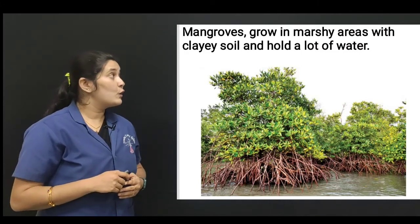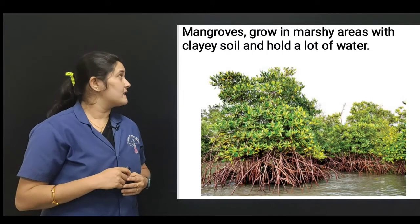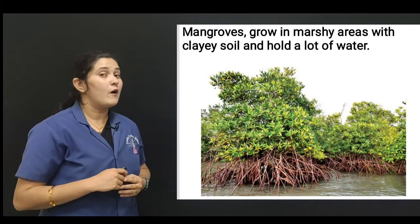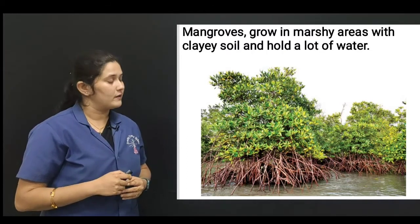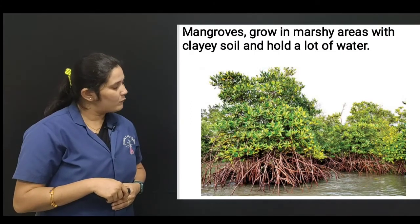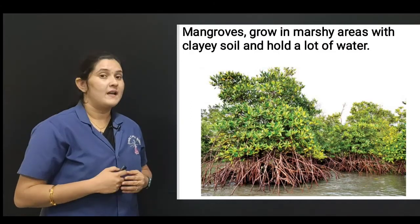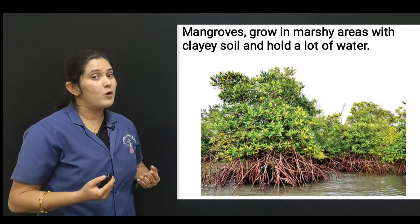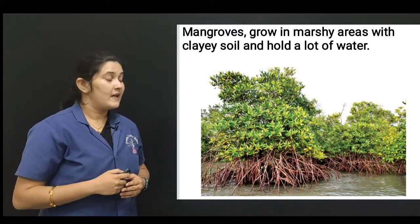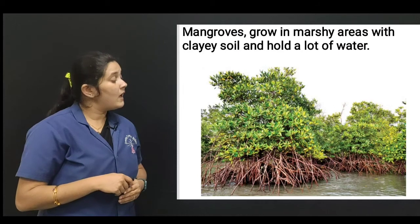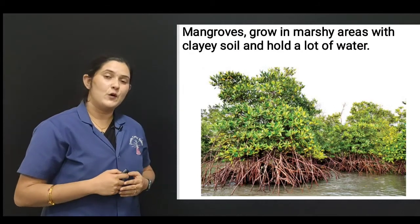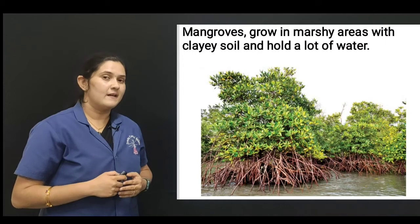Mangroves grow in marshy areas with clay soil that holds a lot of water. Here you can observe the roots that are above the water. They grow near water bodies or seashores. The roots are above the water and help the tree to absorb air.